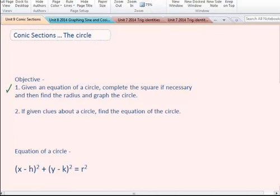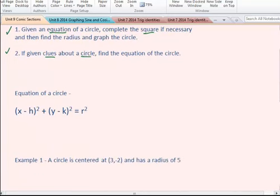So the first thing we want to do is talk about what our objectives are. Given an equation of a circle, we'd like you to complete the square if necessary and be able to tell us what the radius and graph of the circle would be, or the center point of the circle would be. And if given clues about a circle, we would like you to find the equation of a circle.